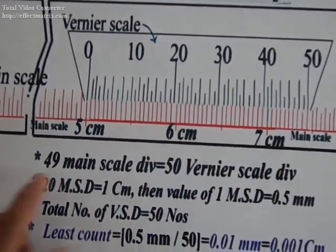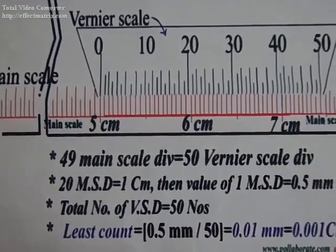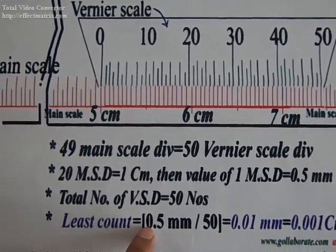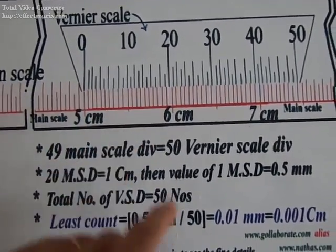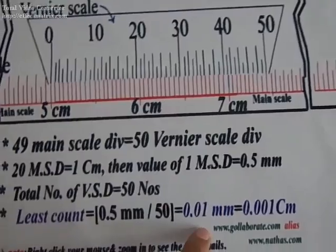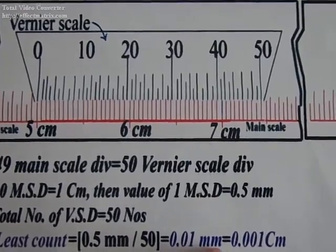49 main scale divisions equals 50 vernier scale divisions. So 1.5 millimeters, the value of one main scale division, divided by 50 vernier scale divisions gives 0.01 millimeter or 0.001 centimeter.